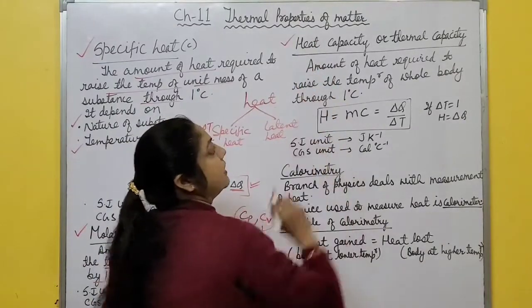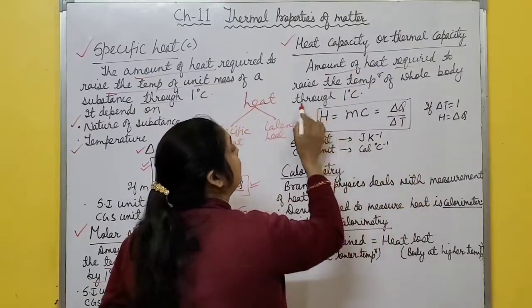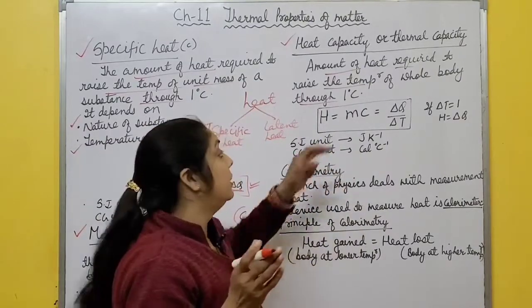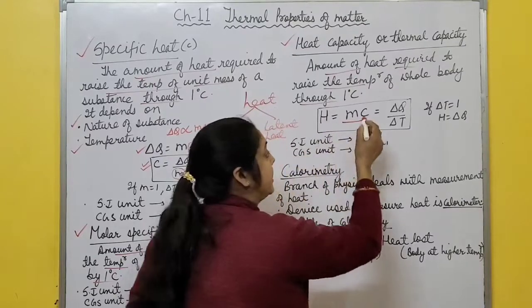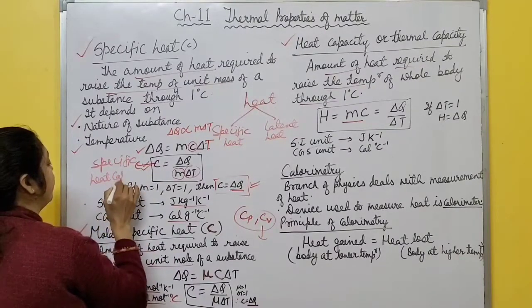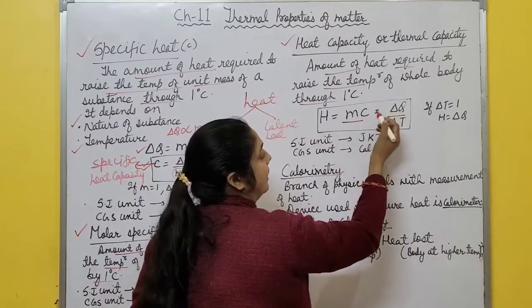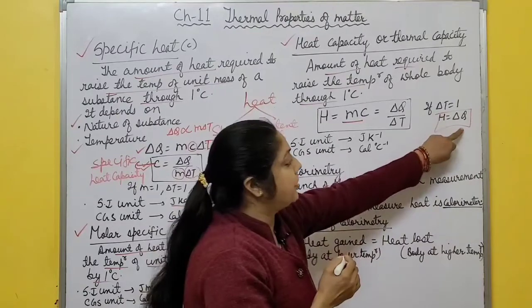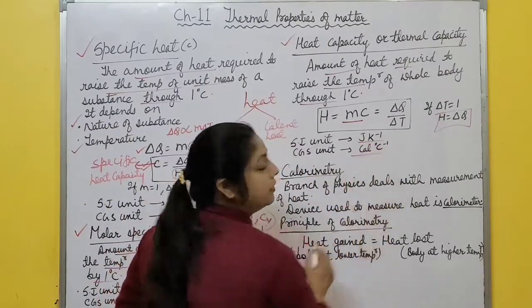Heat capacity or thermal capacity is the amount of heat required to raise the temperature of the whole body through 1 degree Celsius. For unit mass the quantity is specific heat; here it is for the whole body. H = M·c, and from the definition H = ΔQ/ΔT, so if ΔT = 1 then H = ΔQ. Its SI unit is J/K and CGS unit is cal/°C.